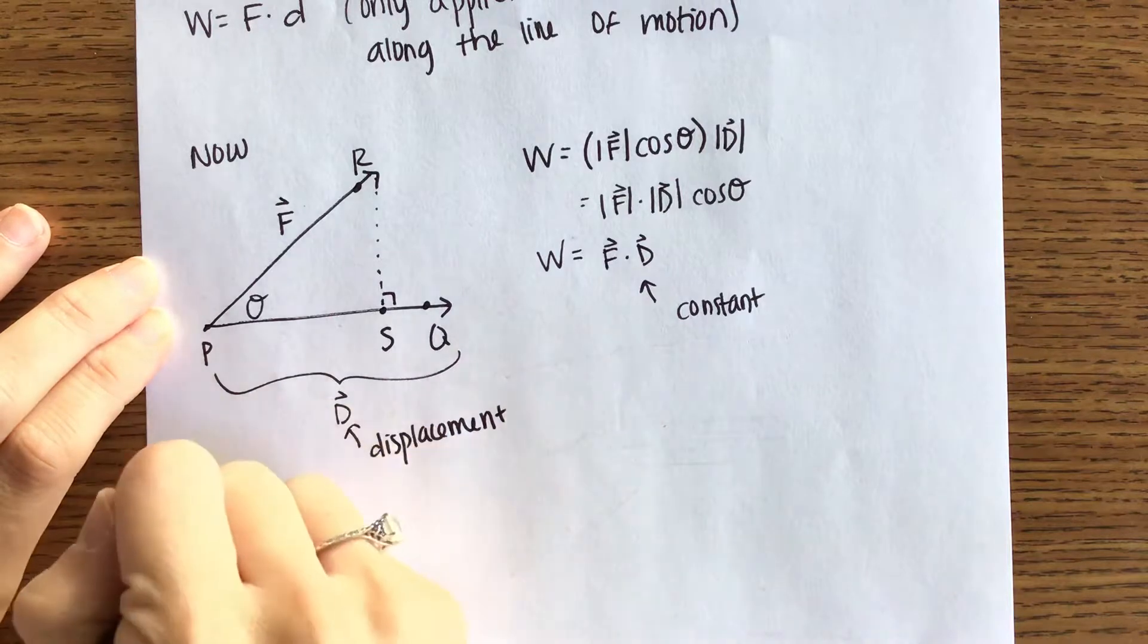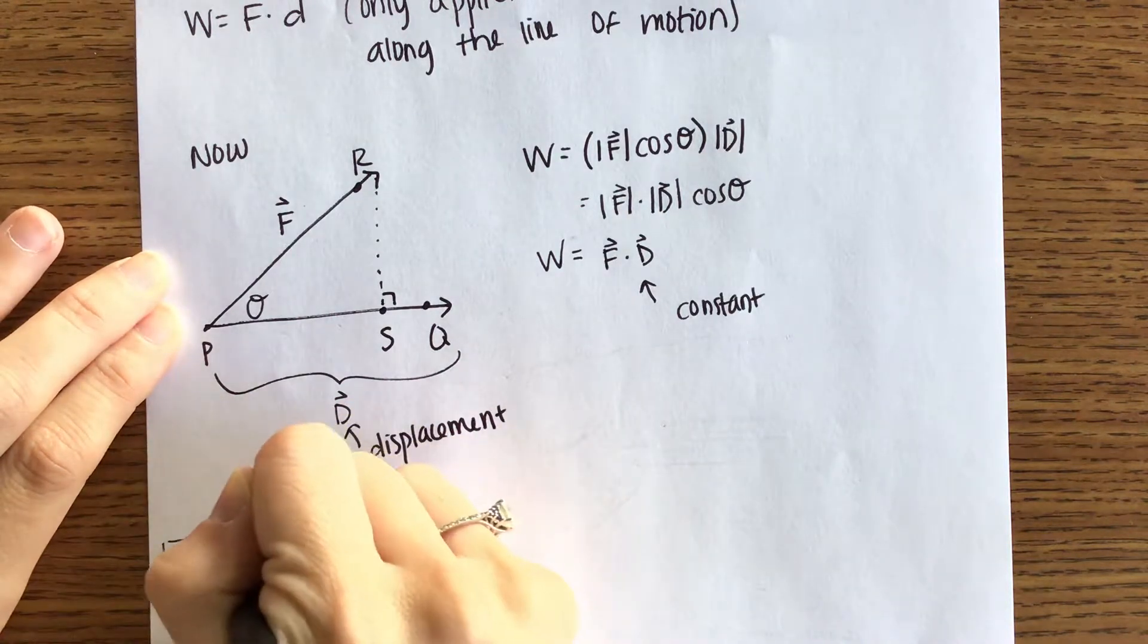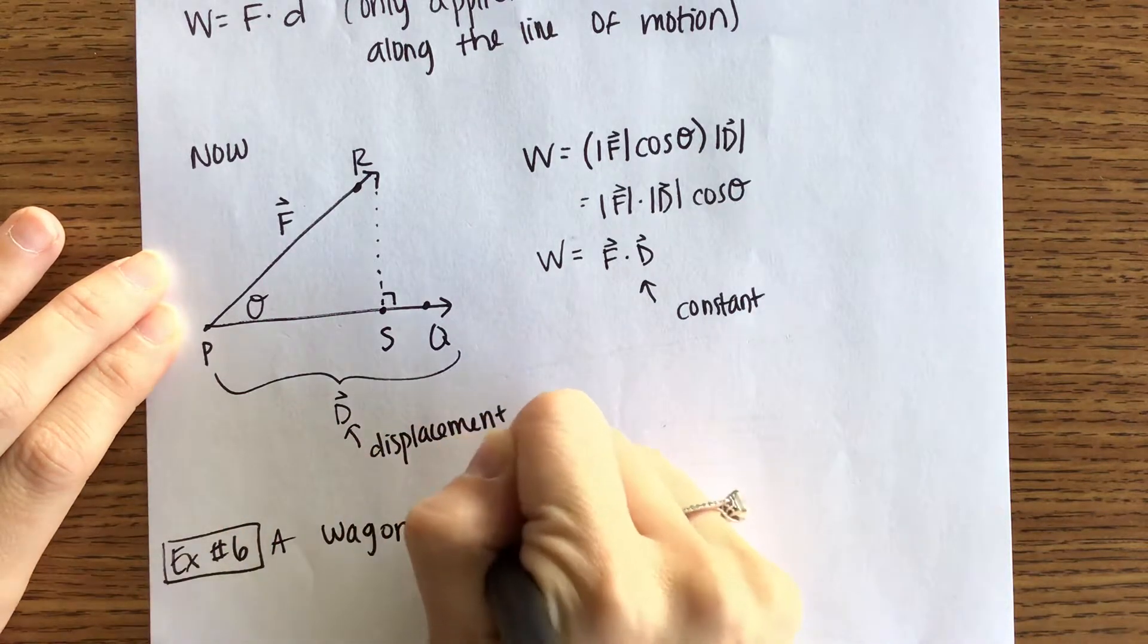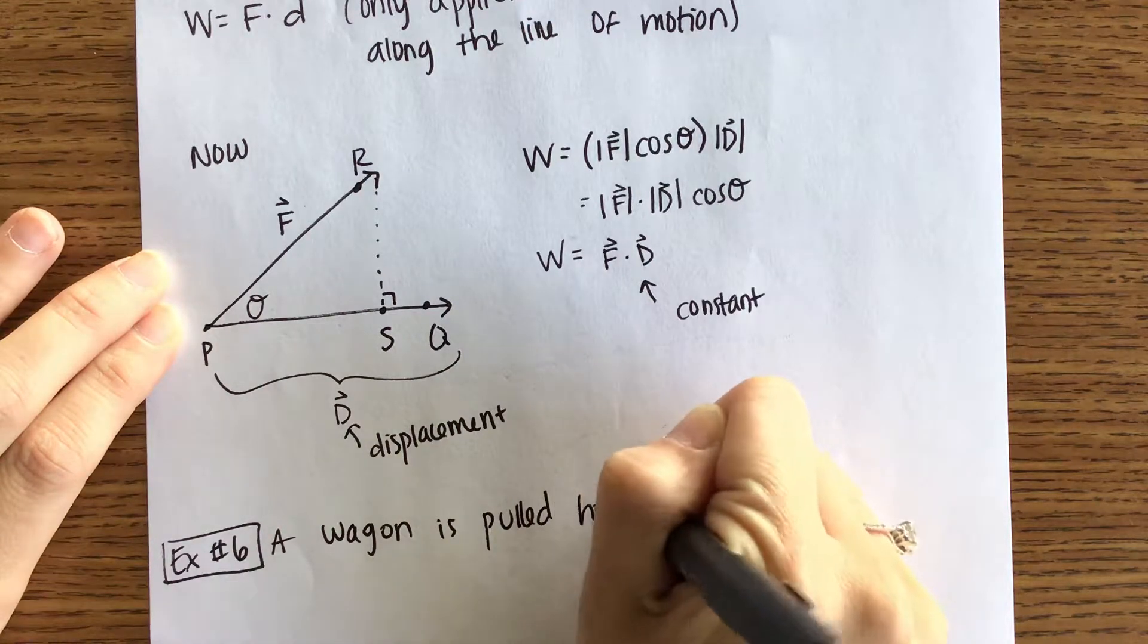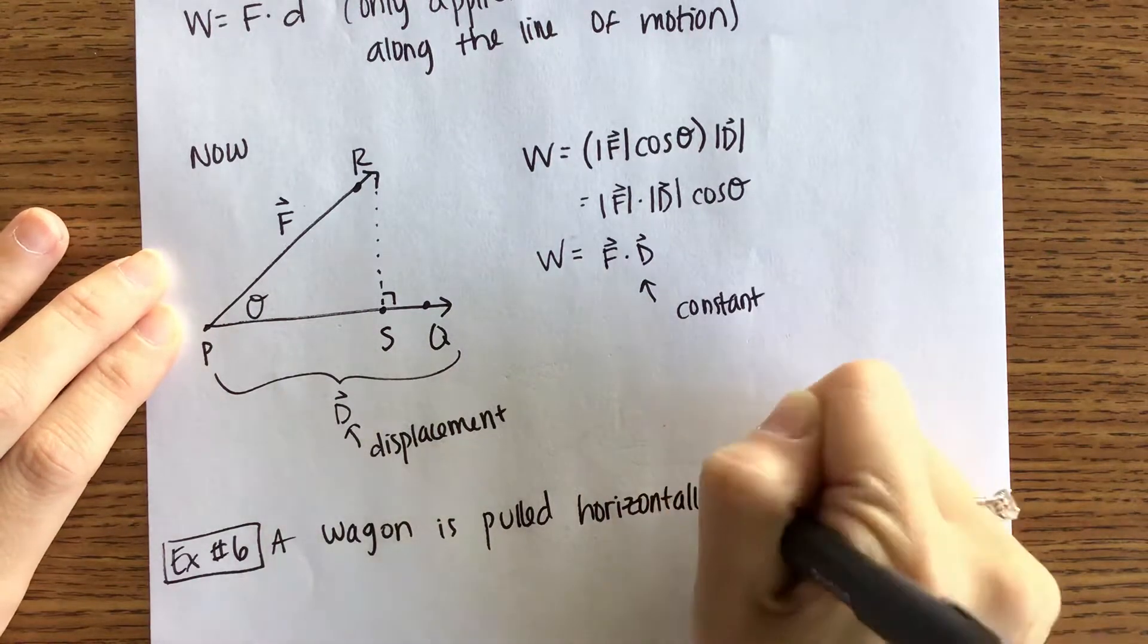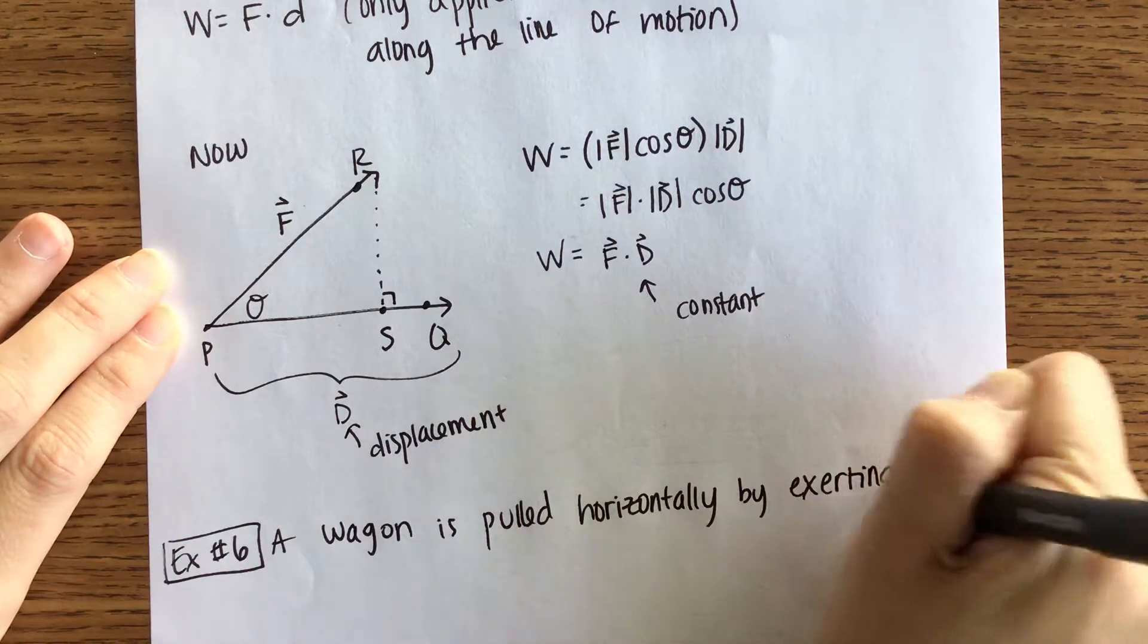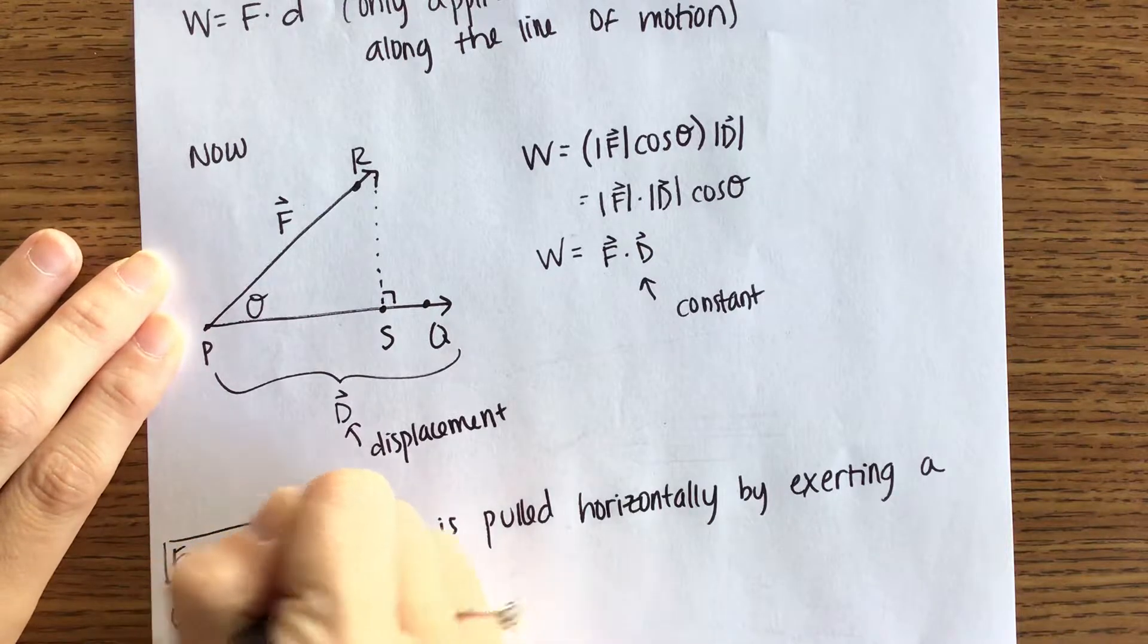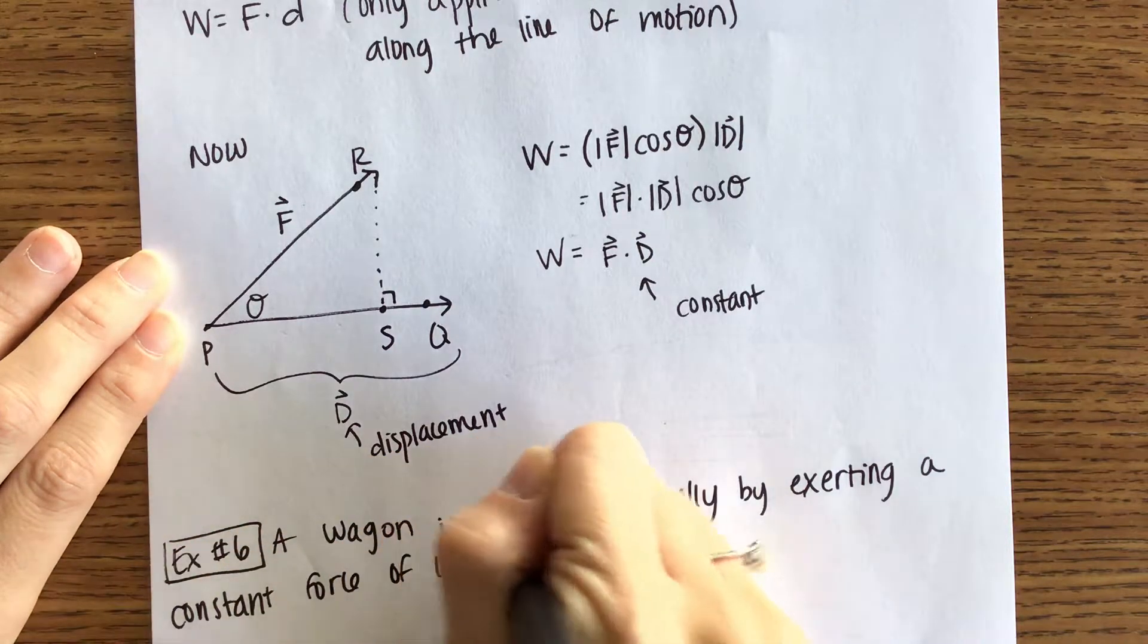Here's the example that we're going to do. A wagon is pulled horizontally by exerting a constant force of 10 pounds on the handle.